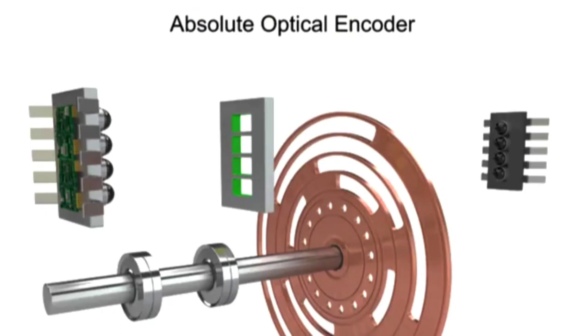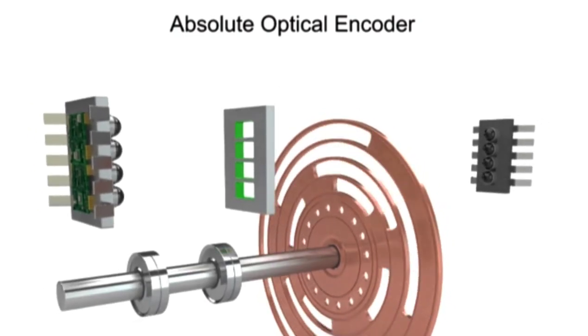An absolute encoder consists of four major components: a rotating encoder disk, a light source such as an LED, a photo detector as the light sensor, and a signal conditioner that converts the signals into square waveform.